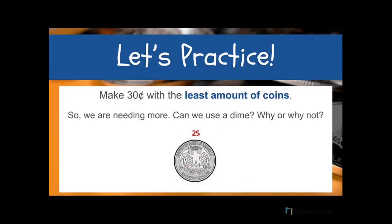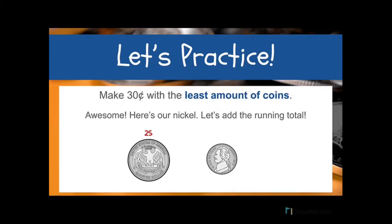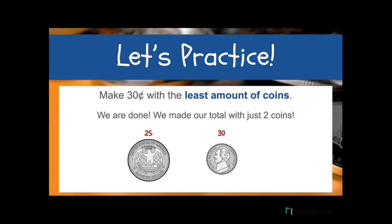We need more because we are not at 30 cents yet. Can we use a dime? We can't use a dime because a dime is worth 10 and 25 plus 10 is 35 — that goes over what we're looking for. But what about a nickel? A nickel is worth 5. We can use a nickel because 25 plus 5 is 30. So here's our nickel and let's add to our running total: 25 plus 5 equals 30. We've made 30 cents with just two coins. That's the least amount of coins — we started with the largest amount and worked our way downwards.